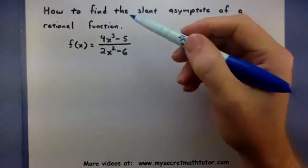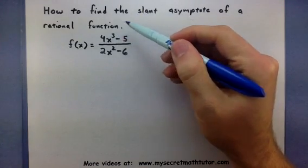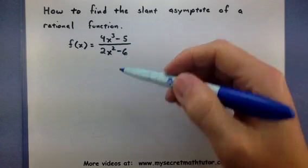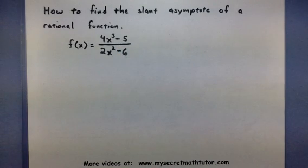As you can see in this example, the largest power on the top is 3 versus the largest power on the bottom, which is 2. So the top is exactly one larger than the bottom.